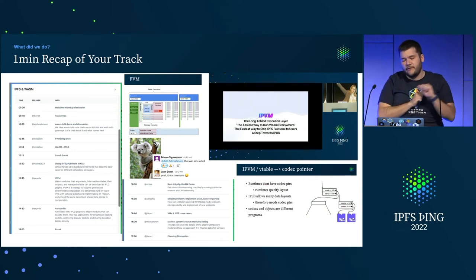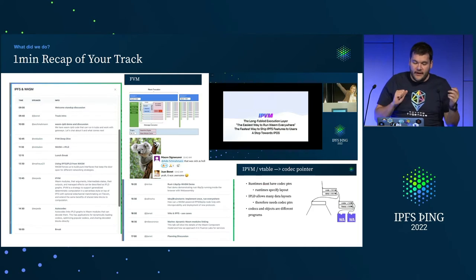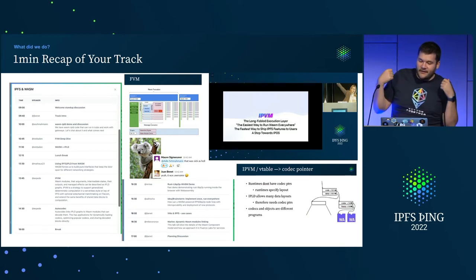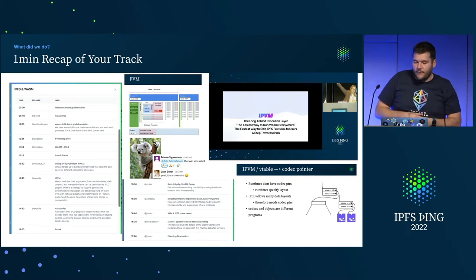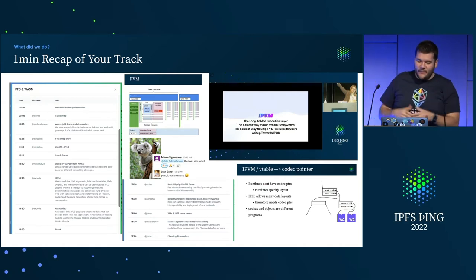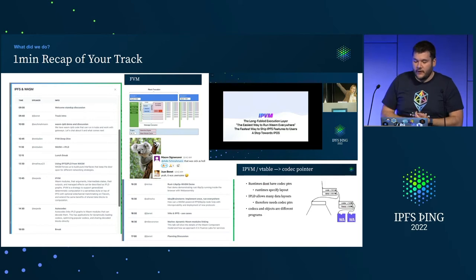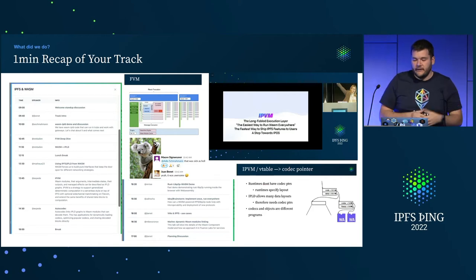Then we had a discussion around many different architectural models for how to approach implementing IPVM. We had more demos about RustLibP2P and Wasm. We went into Aqua and the Aqua model for how to do upgrading of systems, and Alfonso made a big pitch for using that — implement once and run everywhere.